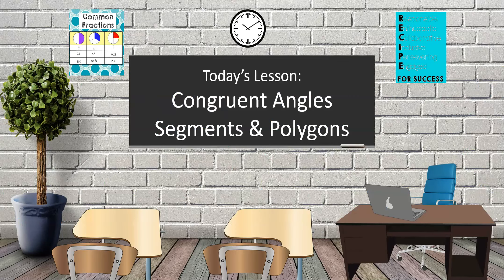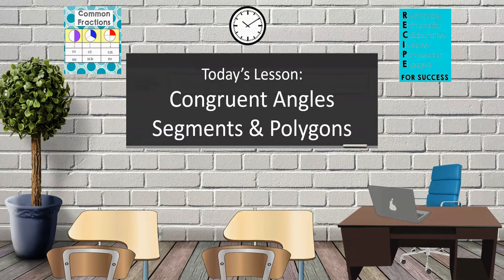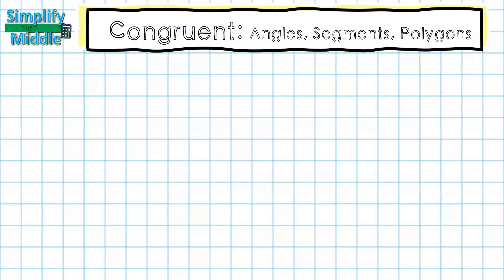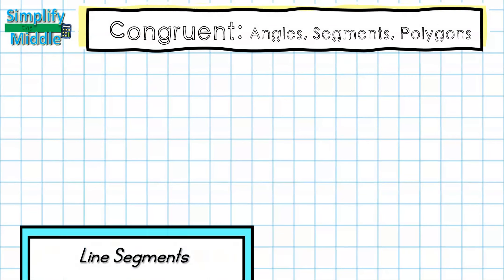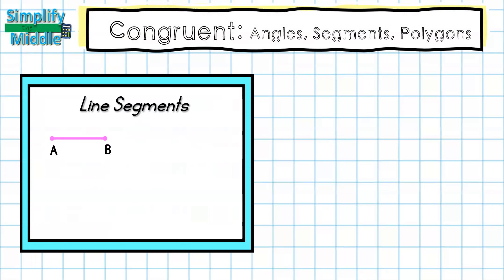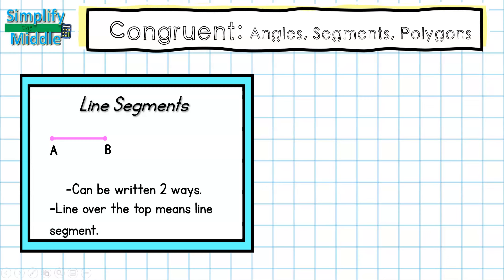Hi and welcome to today's lesson on congruent angles, segments, and polygons. We're first going to start by identifying how to write line segments. There are a couple of things: first, it needs to be written in two ways; second, the line over the top means line segment. Here I have line segment AB or line segment BA.